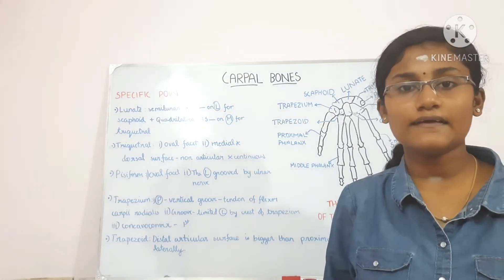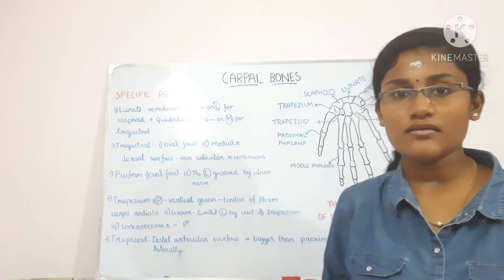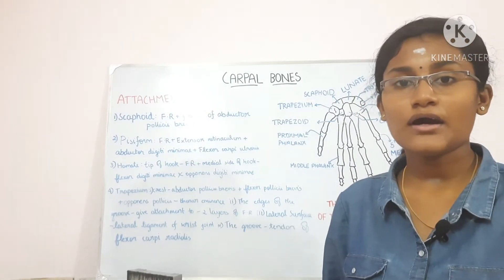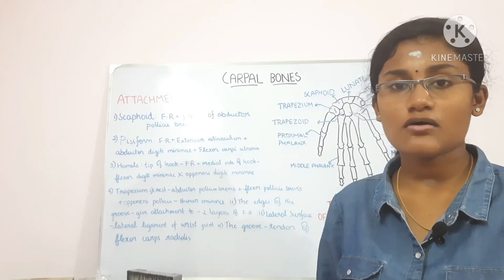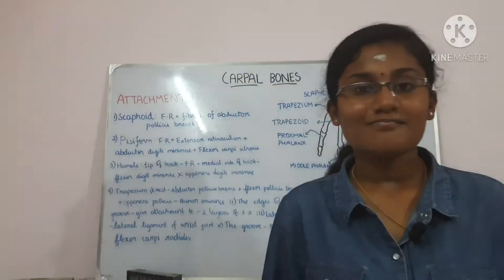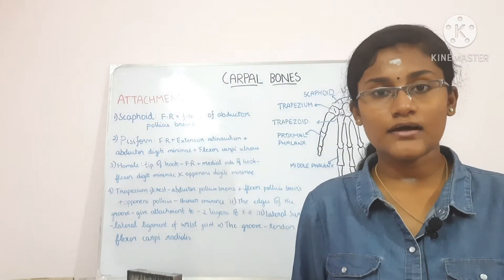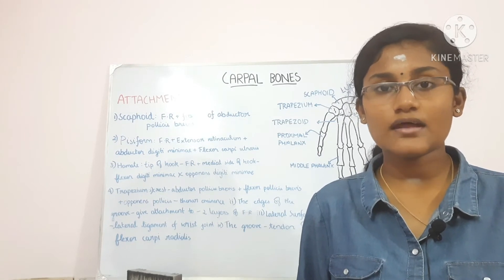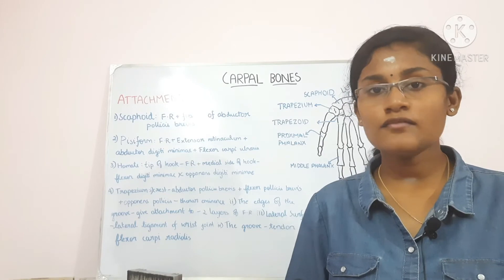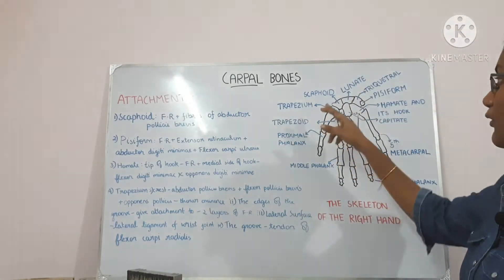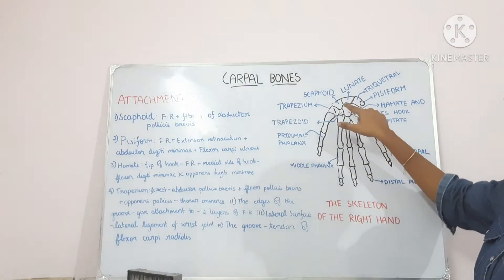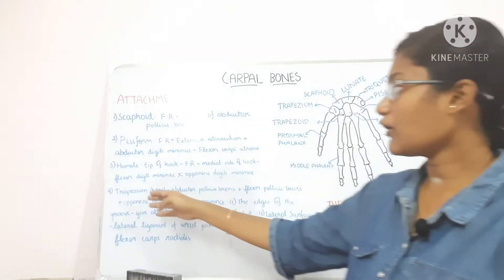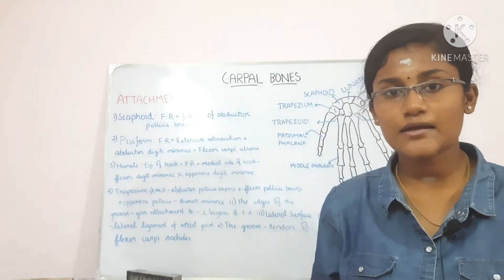Now let's talk about the attachments to each of these bones. There are four bony pillars in the four corners of the carpus and all the attachments happen here. These four bony pillars are the scaphoid, trapezium, pisiform and hamate — to these four bones only, all the attachments take place.